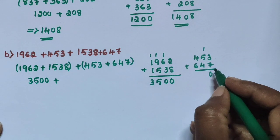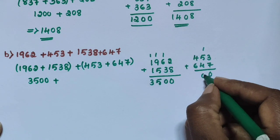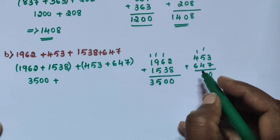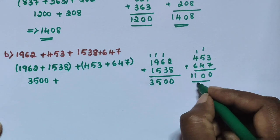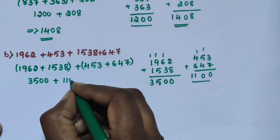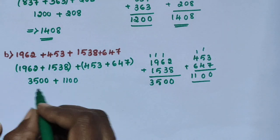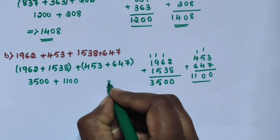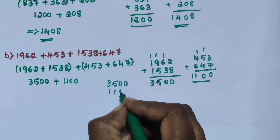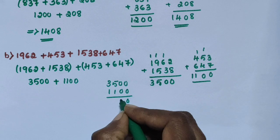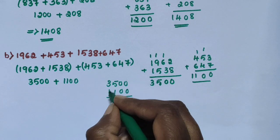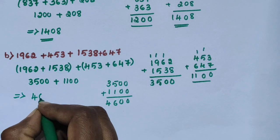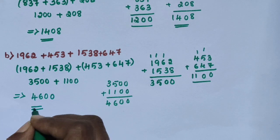1 plus 5 is 6, 6 plus 4 is 10, write 0, carry 1. 1 plus 4 is 5, 5 plus 6 is 11. Result is 3500. Then add the second group 453 plus 647. The answer is 4600.